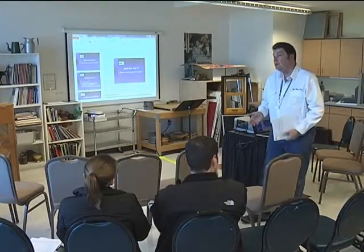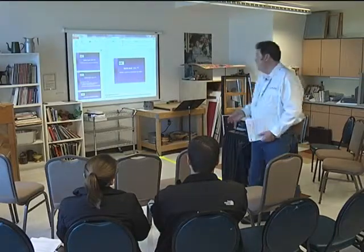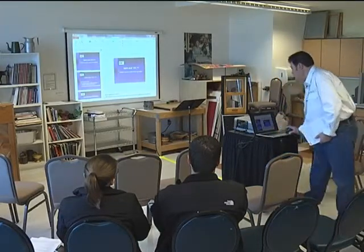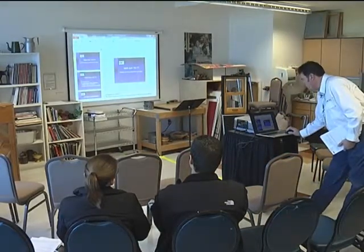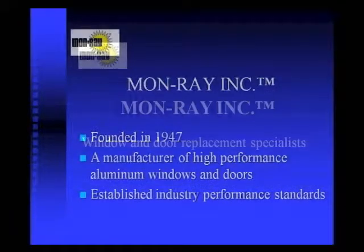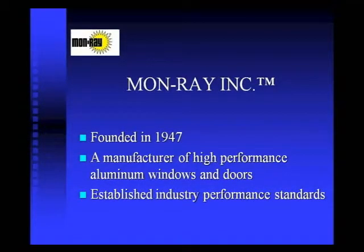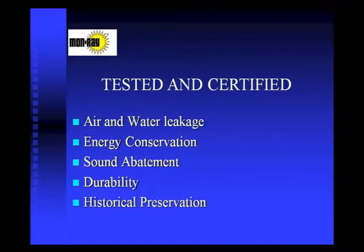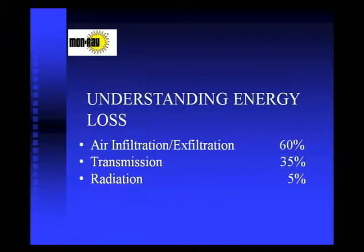There are other things that can also be done. When you look at how a window system works inside your house, you find out that most of what happens to a window that causes you to think about getting rid of it is you're losing energy, or the window looks bad and you just feel you need a new one. The ways that windows lose energy are through air infiltration, transmission, and radiation.